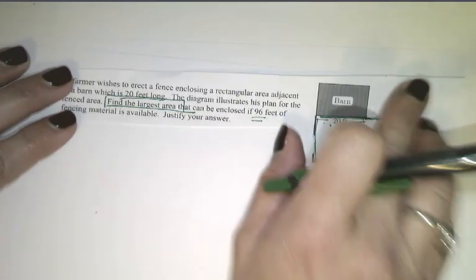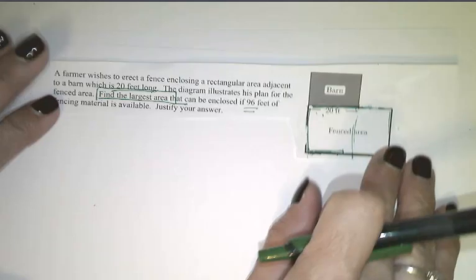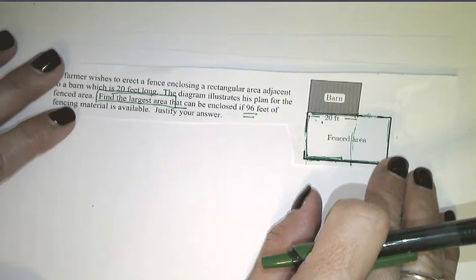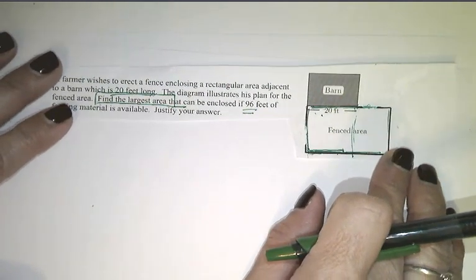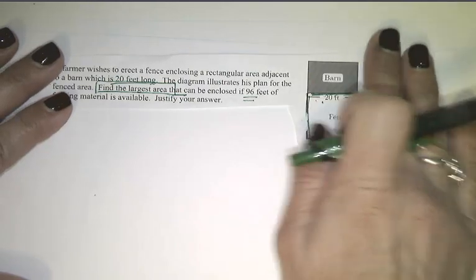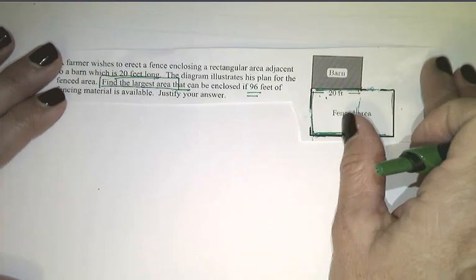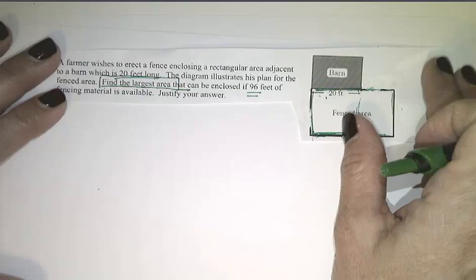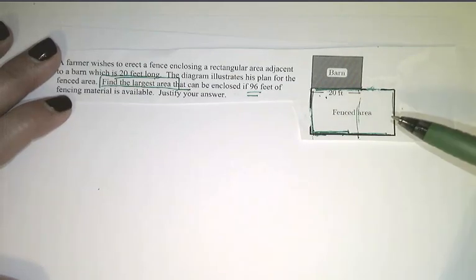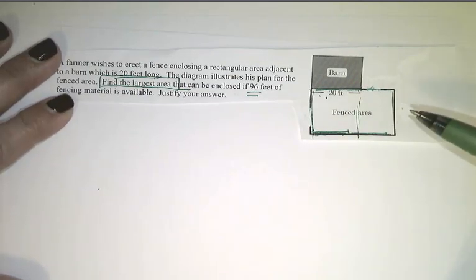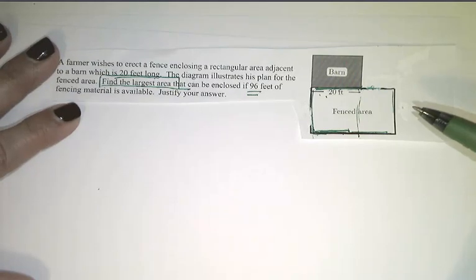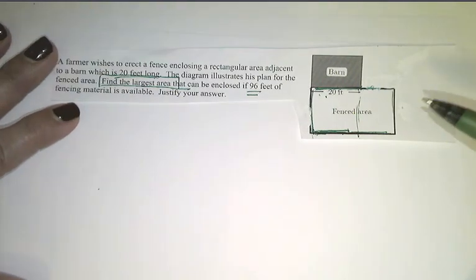Alright. So we have a farmer who wishes to erect a fence enclosing a rectangular area adjacent to a barn which is 20 feet long, which is a lot of words and to many students, including myself, that might overwhelm you. The diagram illustrates his plan for the fenced area. Find the largest area that can be enclosed if 96 feet of fencing material is available. Justify your answer. Too much information.